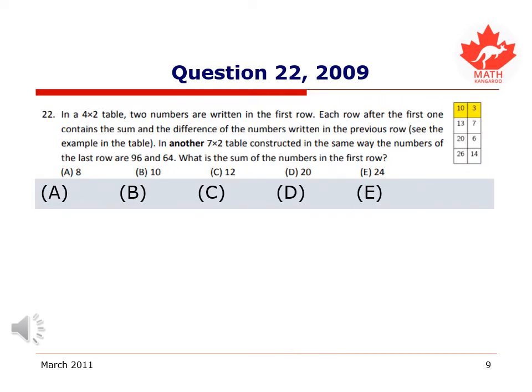Moving on to question 22 from the 2009 test, we have that in a 4x2 table, two numbers are written in the first row. Each row after the first one contains the sum and difference of the numbers written in the previous row. See the table. We see that obviously the left box in each row is the sum, and the right box is the difference. In another 7x2 table constructed in the same way, the numbers of the last row are 96 and 64. What is the sum of the numbers in the first row?